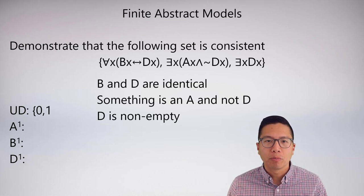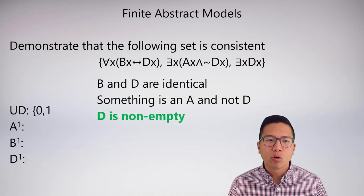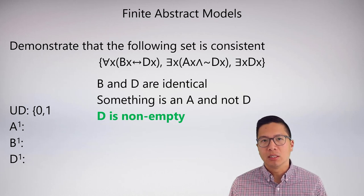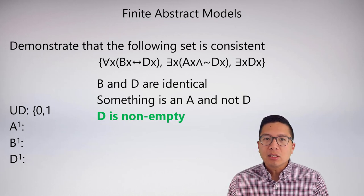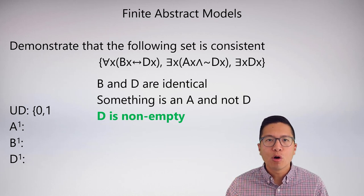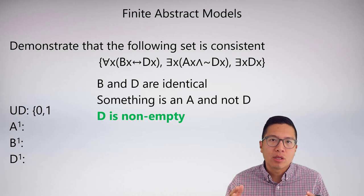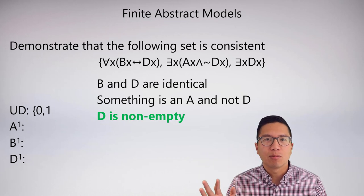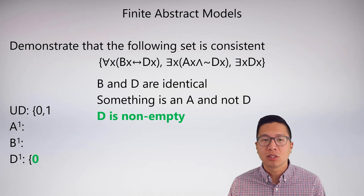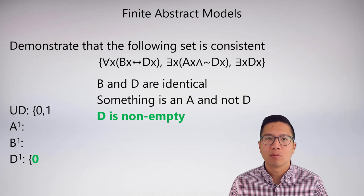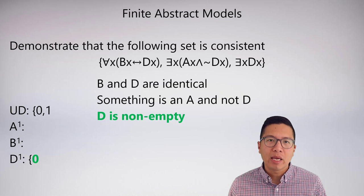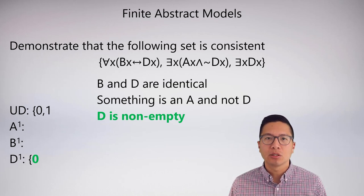Now I have to pick a good starting point. I typically like to pick the easiest sentence, and the easiest sentence is that d is non-empty. For d to be non-empty, something in the universe must be a d. Which one — zero or one? It doesn't matter, because we're constructing this backwards from the meanings. So I'll arbitrarily say zero is going to be in d, and now I've made the third sentence true: d is indeed non-empty.